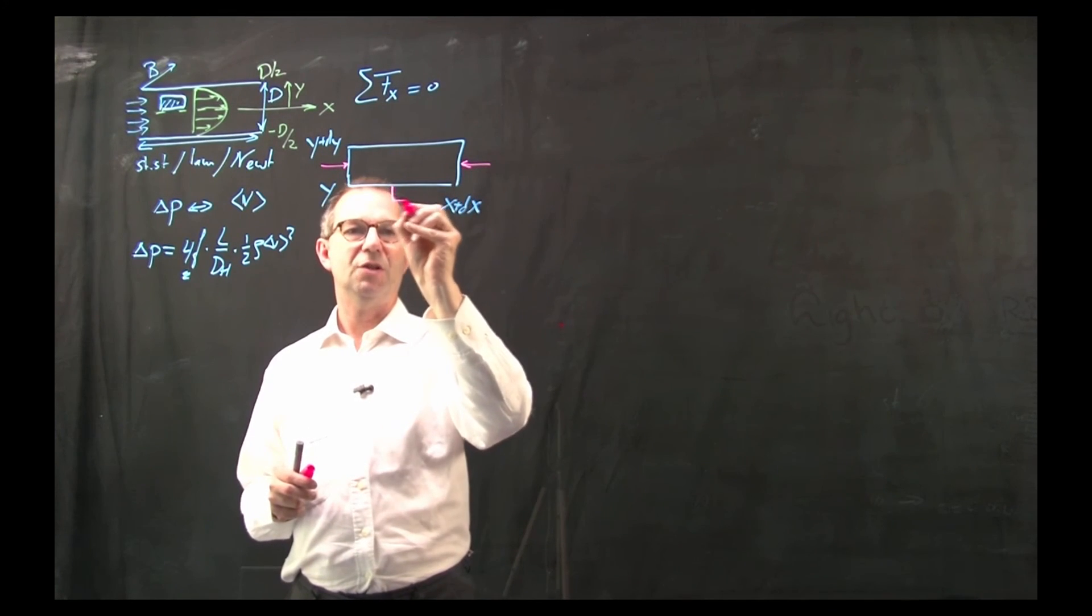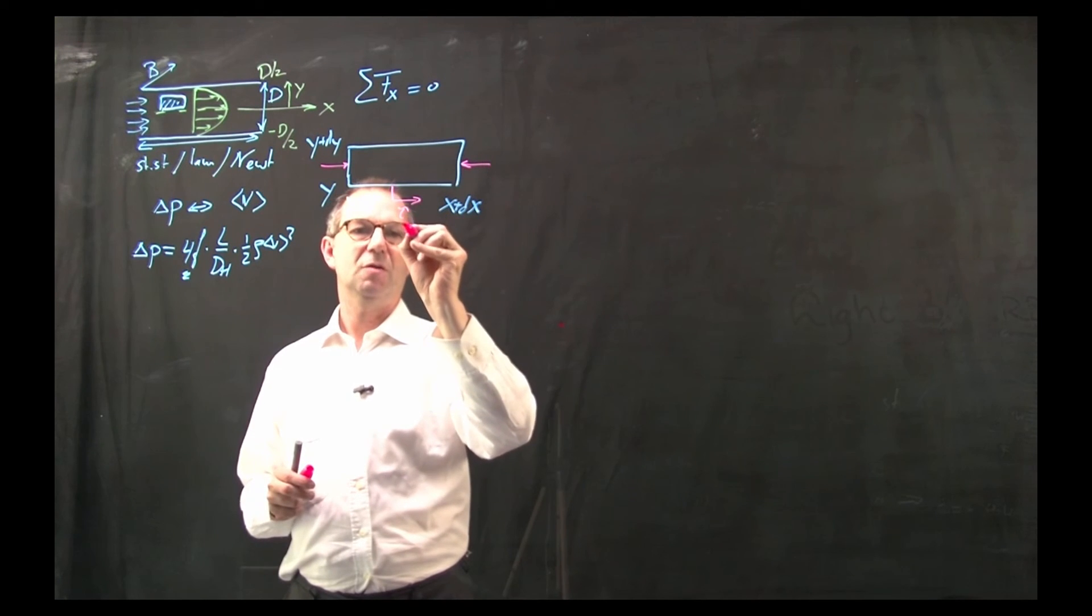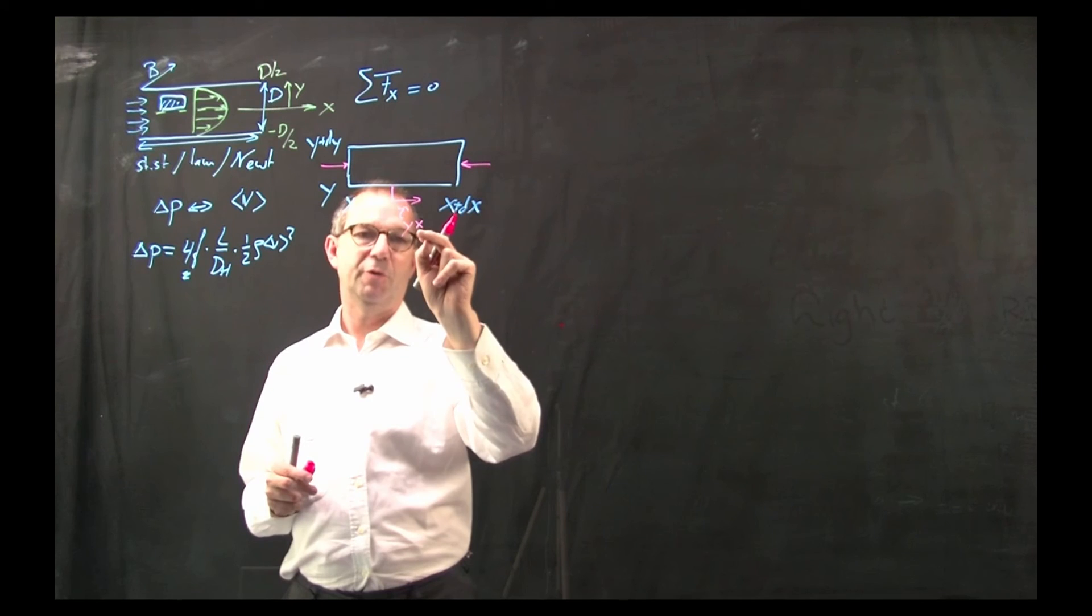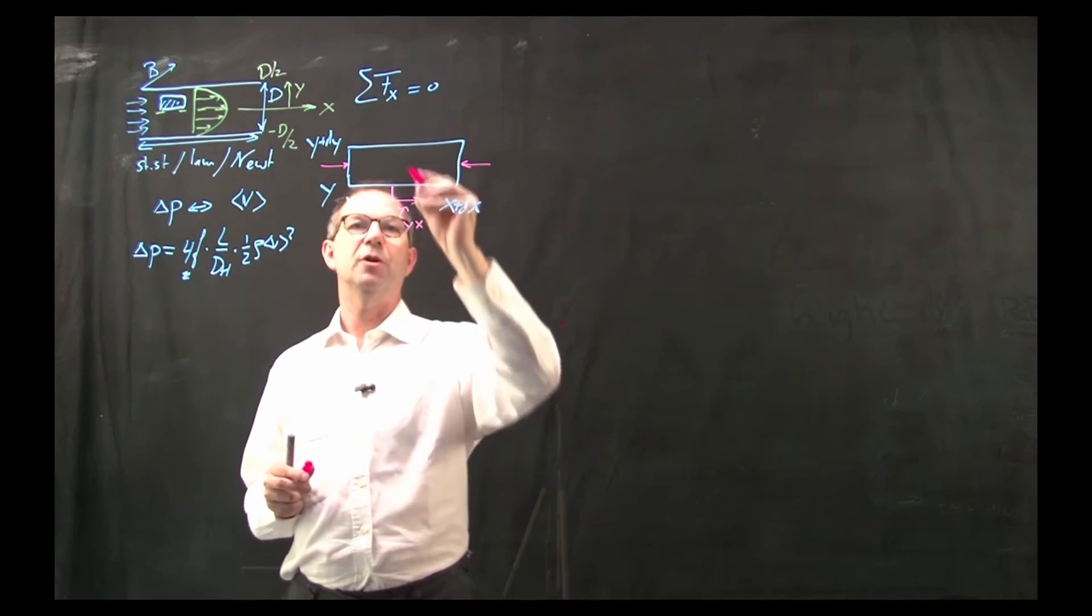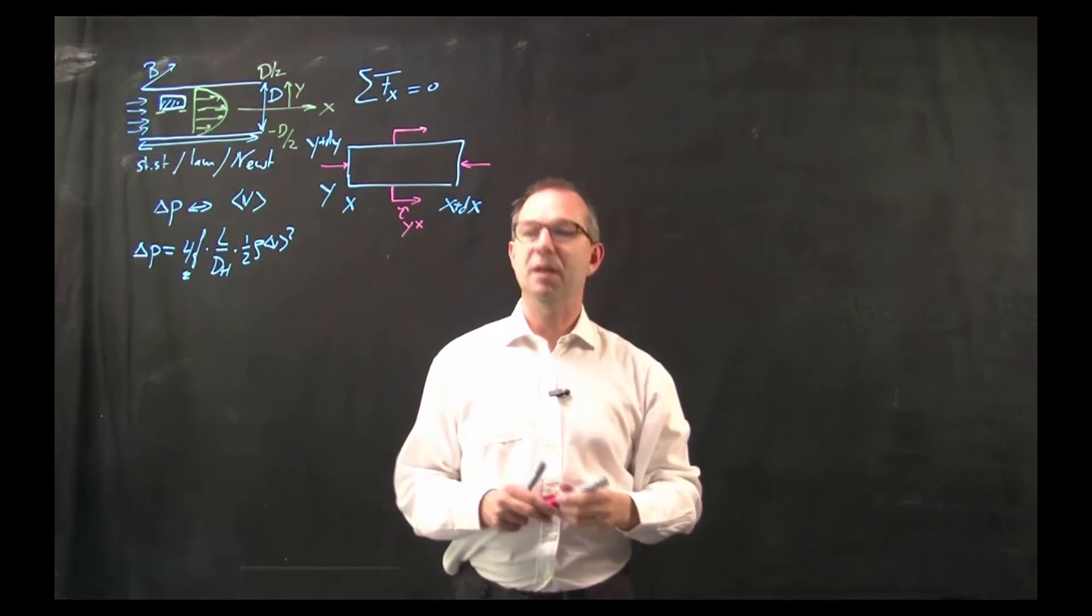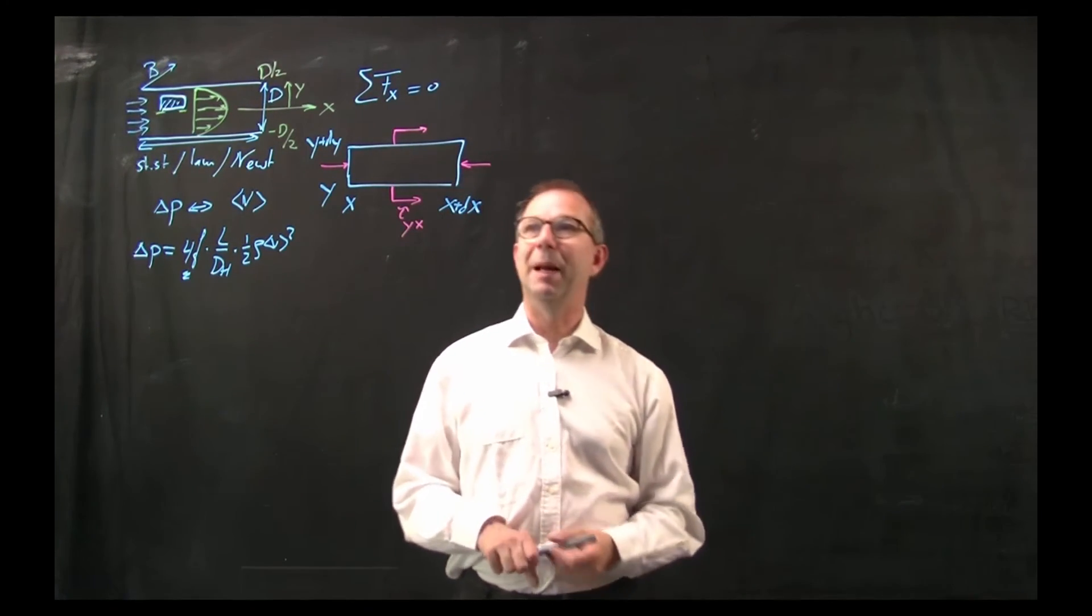Moreover there is a potential shear stress which is tau yx, x direction for velocity, y for the difference in velocity and there is one here as well. These are the four forces and I can set up my balance.